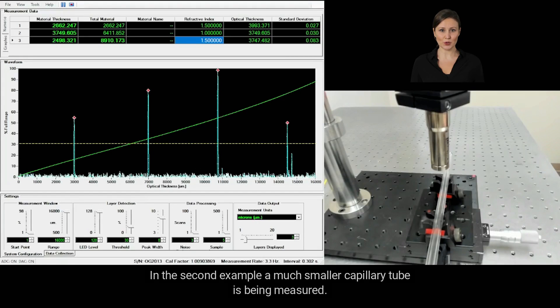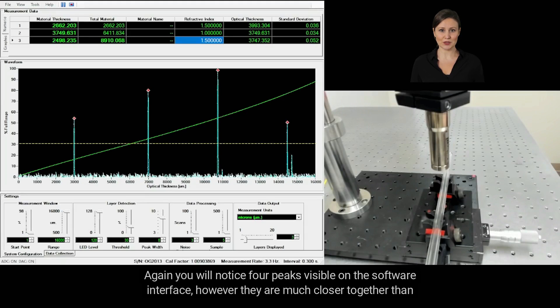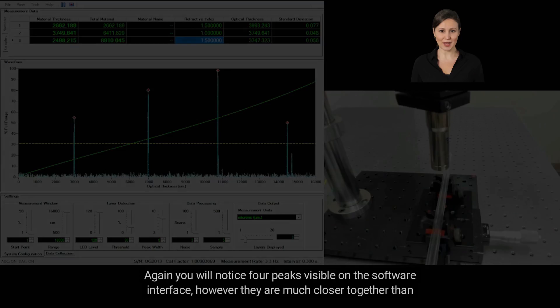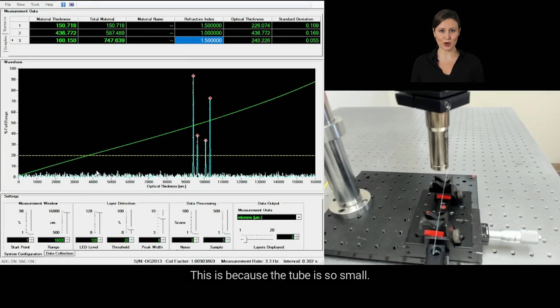In the second example, a much smaller capillary tube is being measured. Again, you will notice four peaks visible on the software interface. However, they are much closer together than the previous example. This is because the tube is so small.